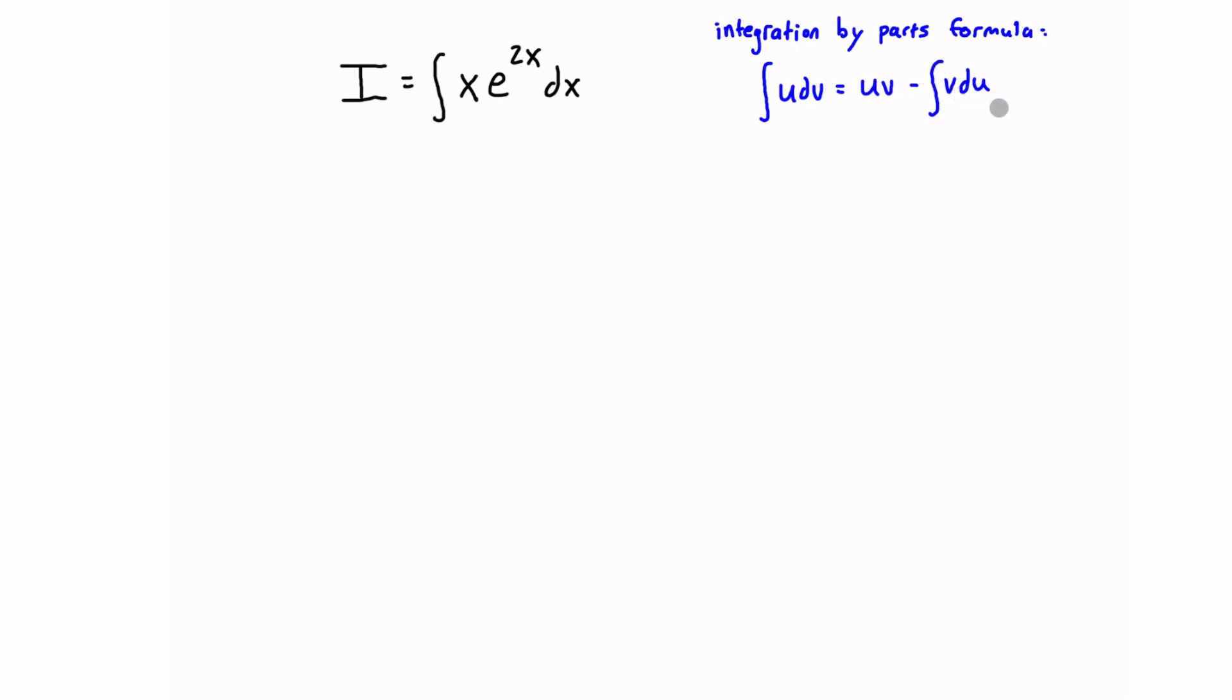Now when you first look at that, you're like, what the heck is this? I have no idea. But basically what we're going to do is we're going to define certain parts of our integrand as u and dv, and then we're going to find the rest.